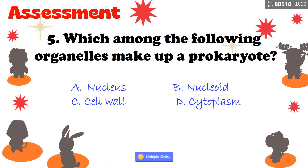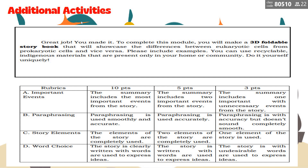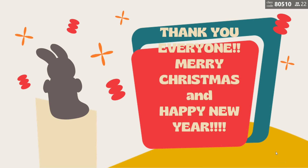That's all. For additional activities, you are going to do a 3D foldable storybook and you are given the rubrics to follow. Concentrate on the 10 points covering important events, paraphrasing, story elements, and word choice. If you don't have any questions, thank you, everyone. Merry Christmas and Happy New Year!